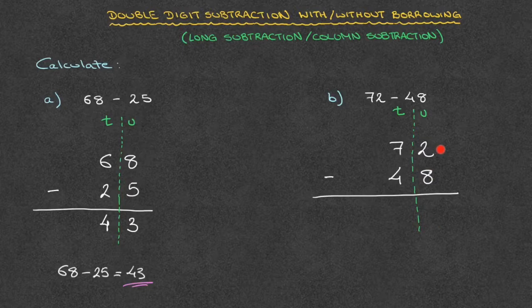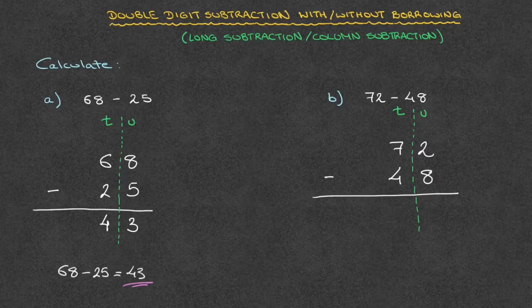We have 2 minus 8. But since 2 is less than 8, we can't simply subtract like we did in the previous example. Instead we need to do something.